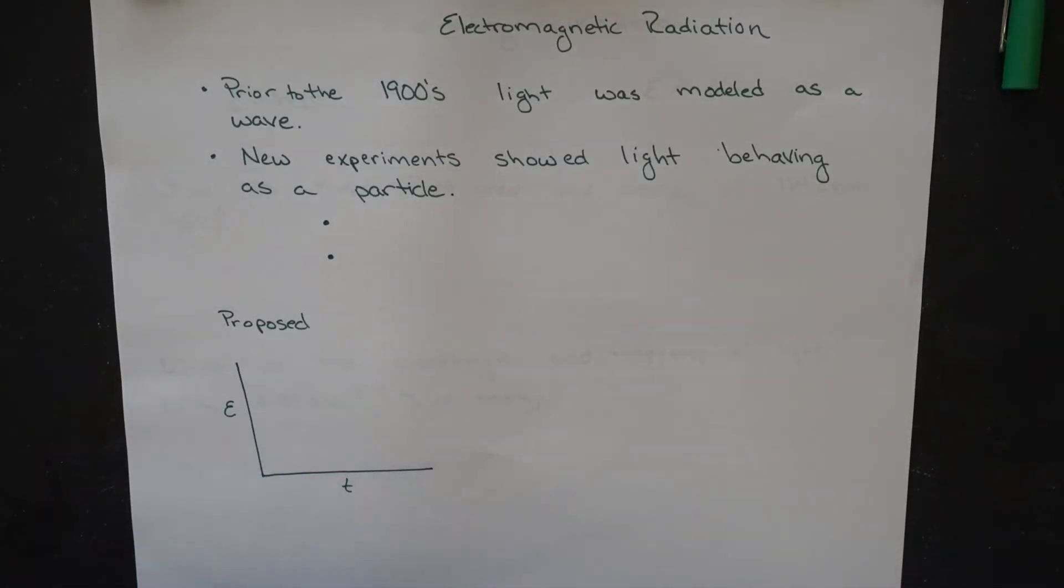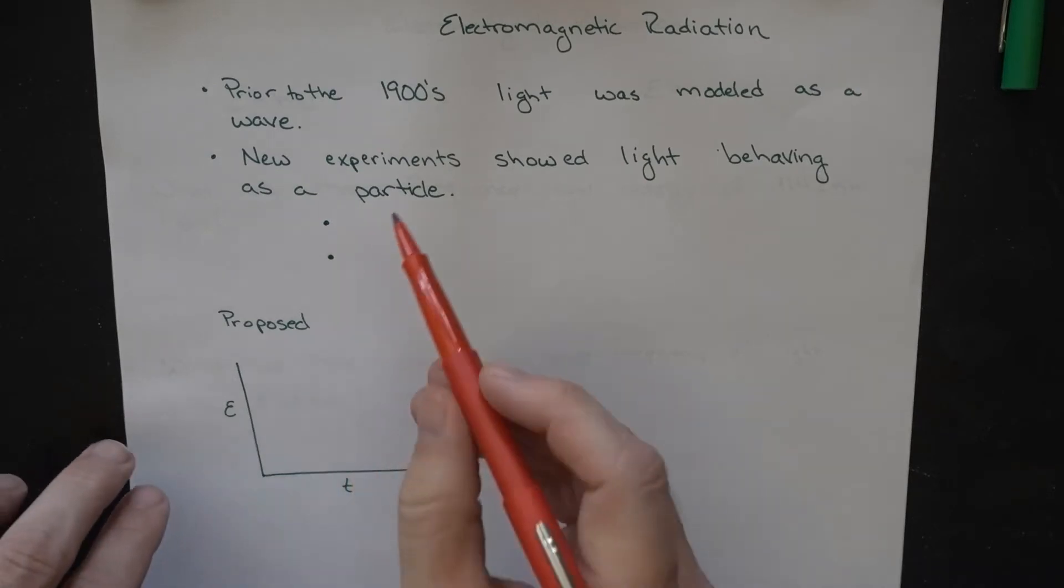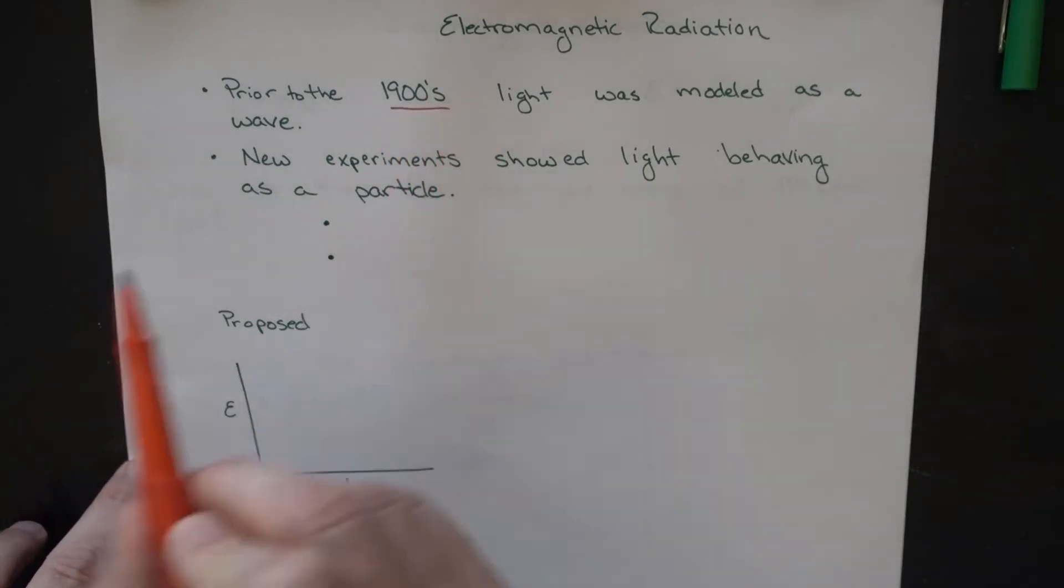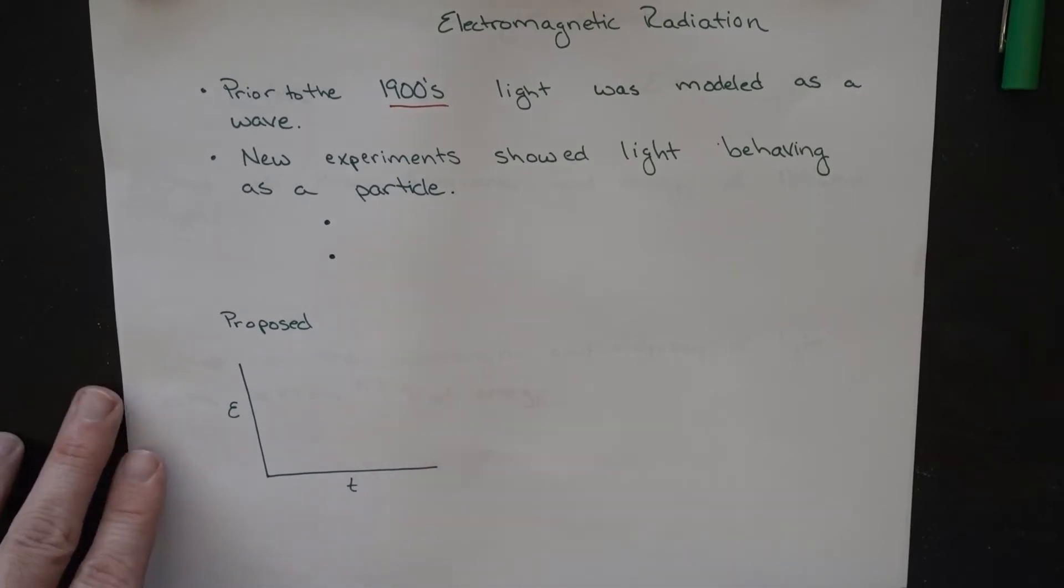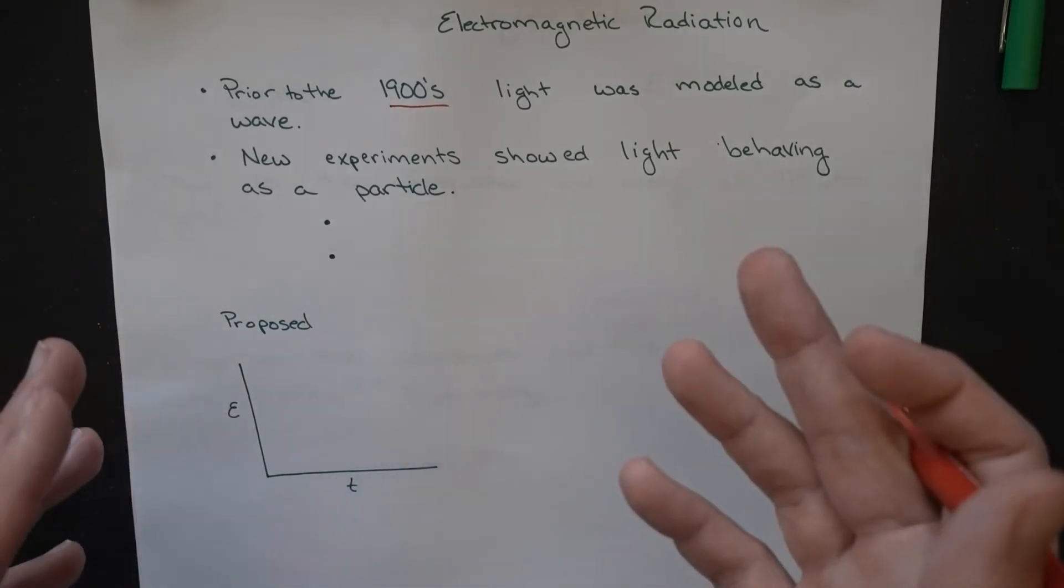Continuing with electromagnetic radiation, one thing to keep in mind is that prior to the 1900s, light was modeled almost exclusively as a wave. And for the most part, it worked. People were able to understand what was going on there with light.